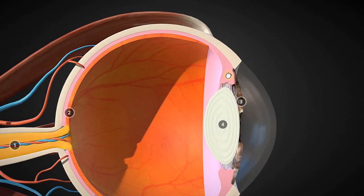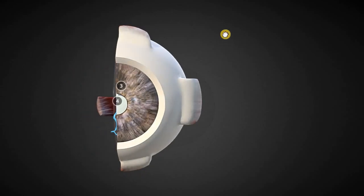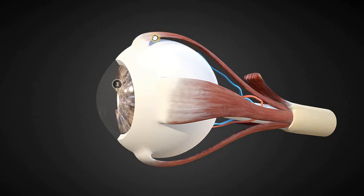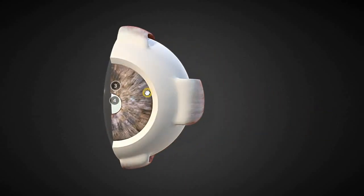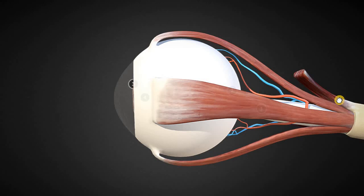This ciliary body, or ciliary muscle, also tapers and comes all the way back to the back of the eye. This is also showing some of the muscles. Here's the superior rectus, inferior rectus, and lateral rectus. This one is the levator palpebrae muscle that's been cut, and that would go to your eyelid to help you blink.